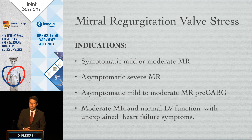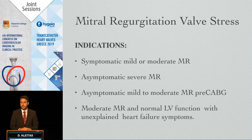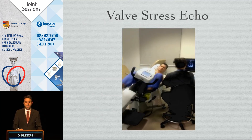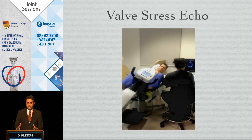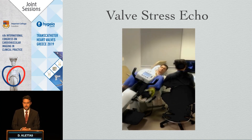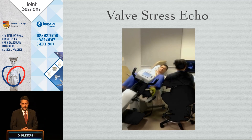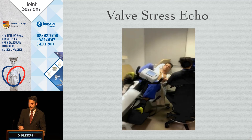The indications for proceeding to mitral valve stress echo include symptomatic mild or moderate MR, asymptomatic severe MR, symptomatic mild to moderate MR pre-CABG, and moderate MR with normal LV function and unexplained heart failure symptoms. The test is performed on a supine bicycle dedicated for cardiac use, tilted to the left side so the heart comes closer to the thoracic wall.